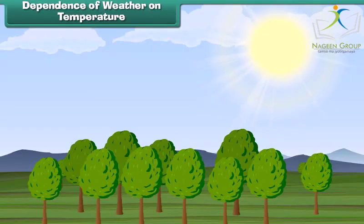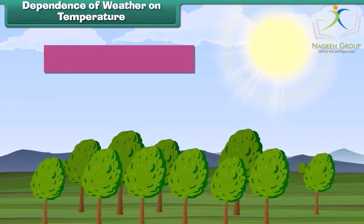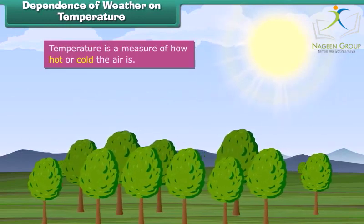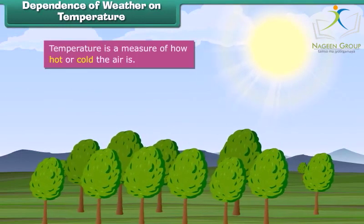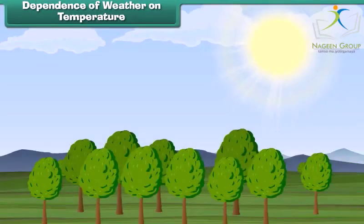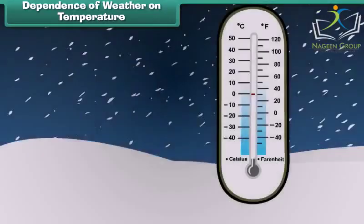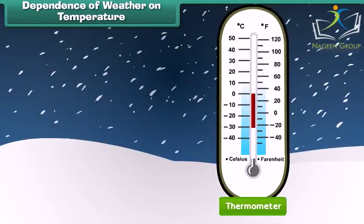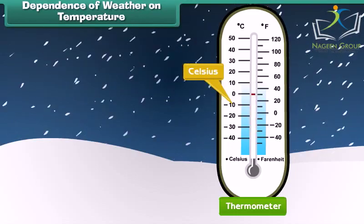Temperature is a measure of how hot or cold the air is, and it depends upon the energy it receives from the sun. Temperature is measured with the help of a device called a thermometer and it is calculated in degrees Celsius and degrees Fahrenheit.